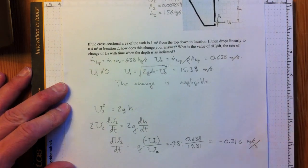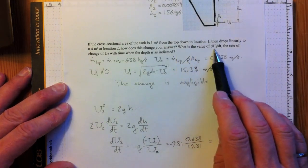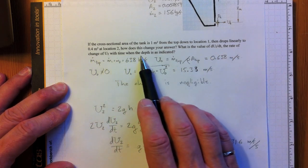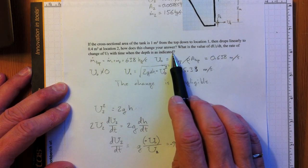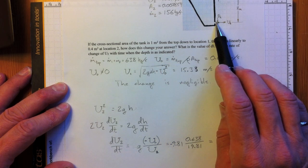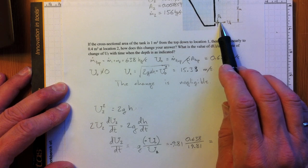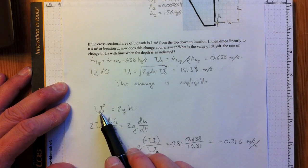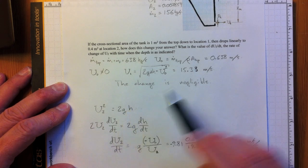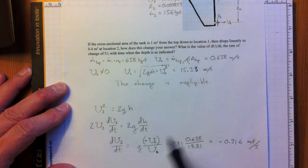The second part of that question asks, what is the value of du dt, the rate of change of U2 with time when the depth is as indicated? So as the water in the tank gets shallower and shallower, U2 will be slowing down.